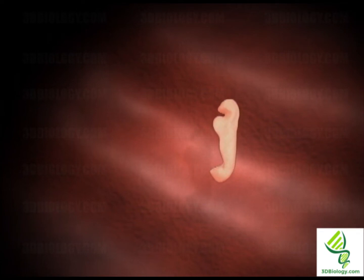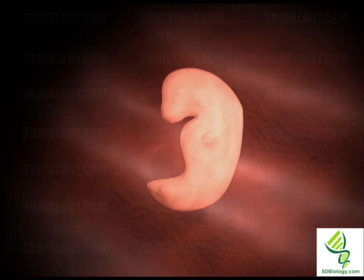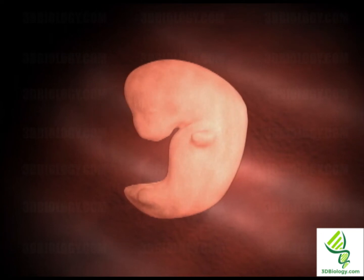Within the first month, the bulbous head and the arching back of the 4 mm long embryo are clearly visible. The structures which will give rise to the brain and spinal cord are now the most developed parts of the embryo.